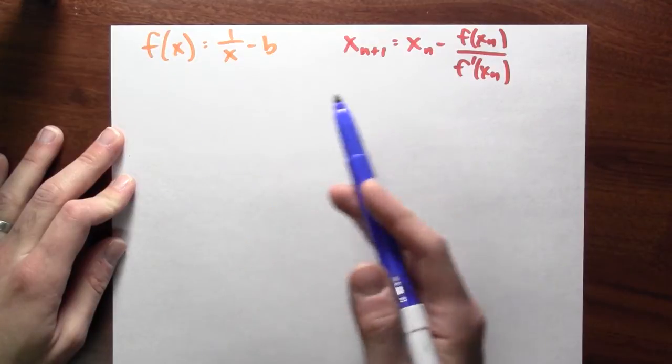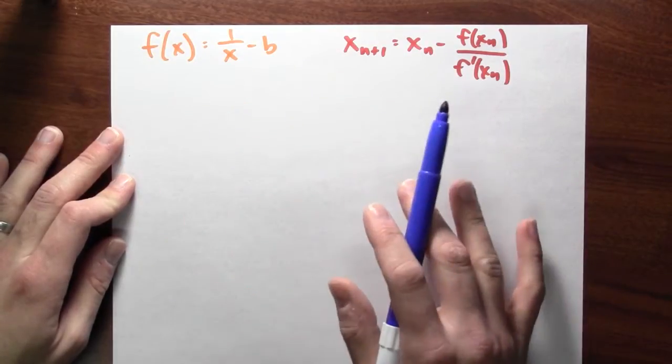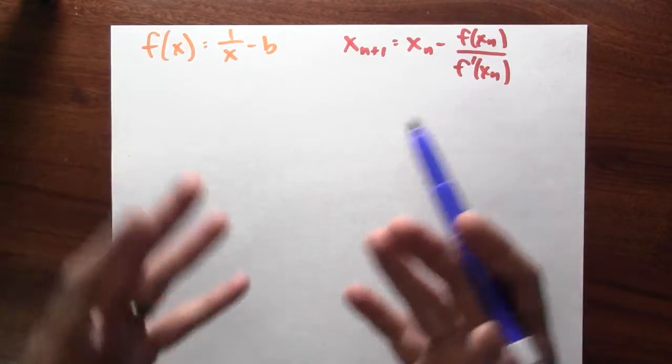So if I can get closer and closer to a zero of this function, I'm actually computing one over b, which is what I want to do.